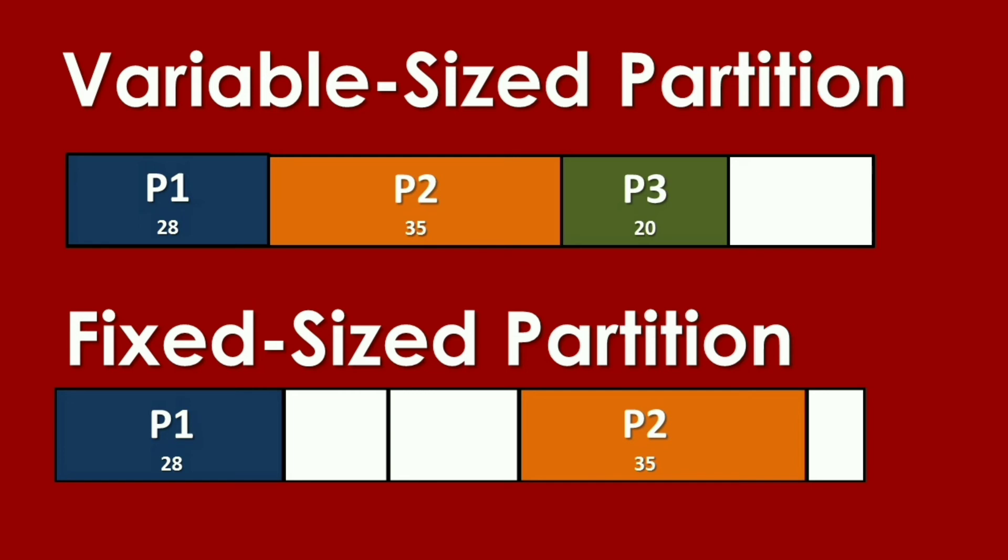Now, let's compare the two partitions. What variable size does is it will fully use the main memory. And when a process arrives, it will place it there. Then the excess will be left vacant for the next incoming processes. While in fixed size, it will divide the memory into fixed numbers. And you cannot combine or reduce the allocated memory. If we look at Process 1 again, we have unused 2 KB. In P2, it has unused 5 KB, which is a waste. You cannot allocate or give it to other processes.